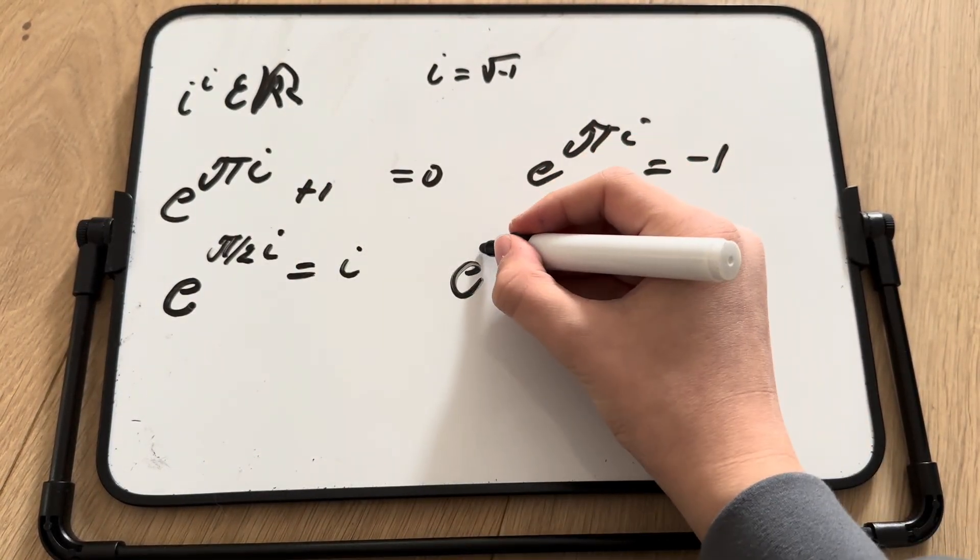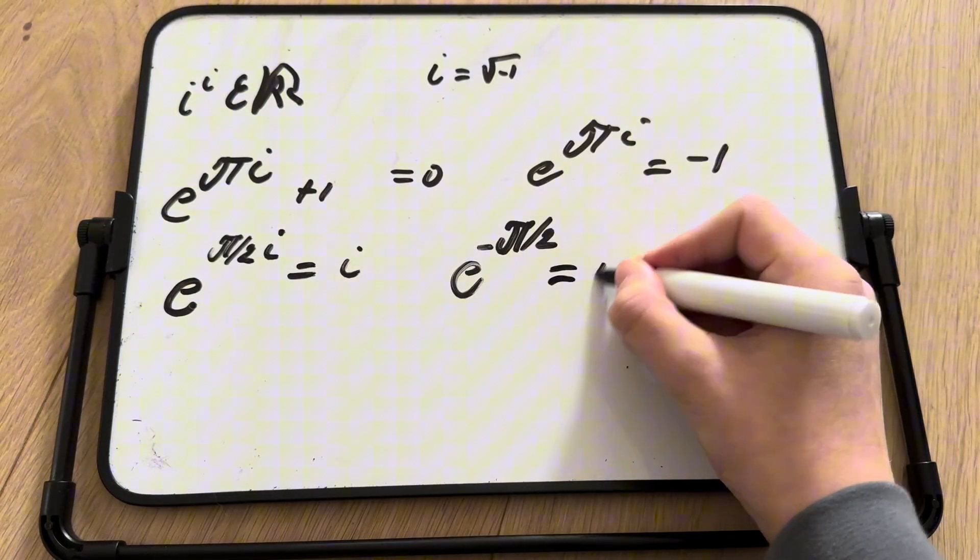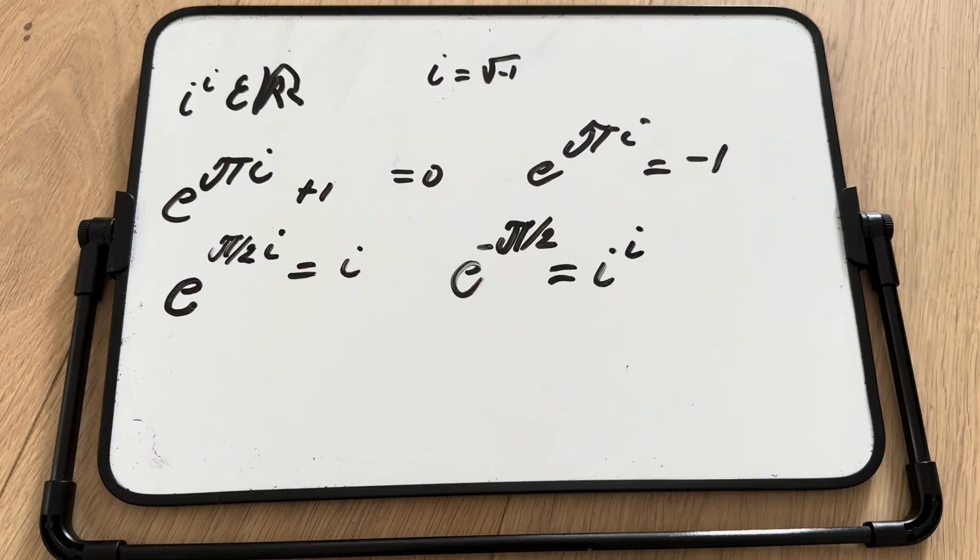So now we have e to the power of pi over 2 negative is equal to i to the i. And that's a real number.